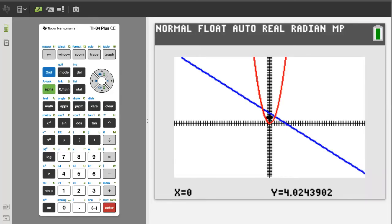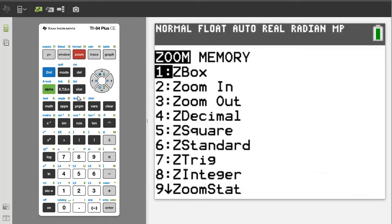The zoom out really zooms out. Maybe too much. So now I will use the Z box to zoom in on an area that I want to see. Press the zoom button. Zoom box is number 1. Press the 1 button.